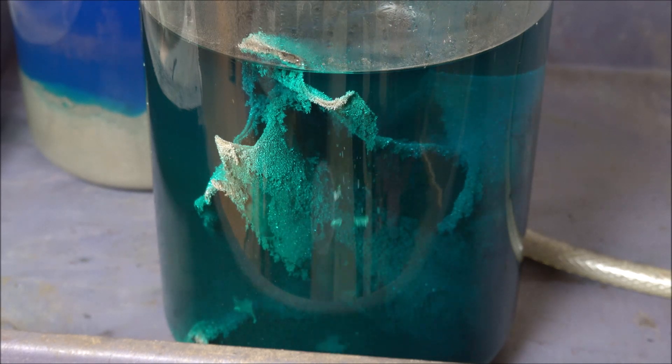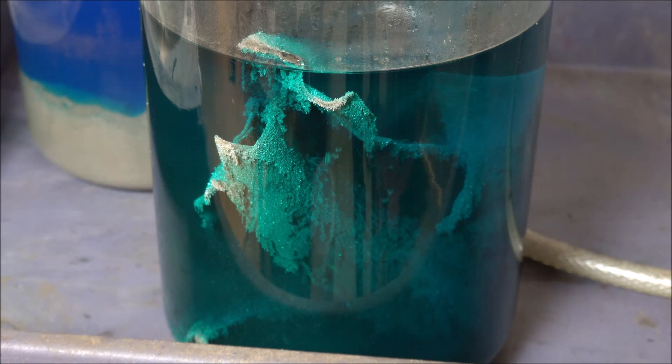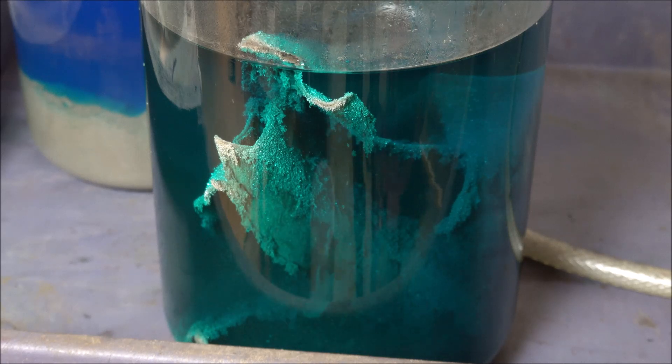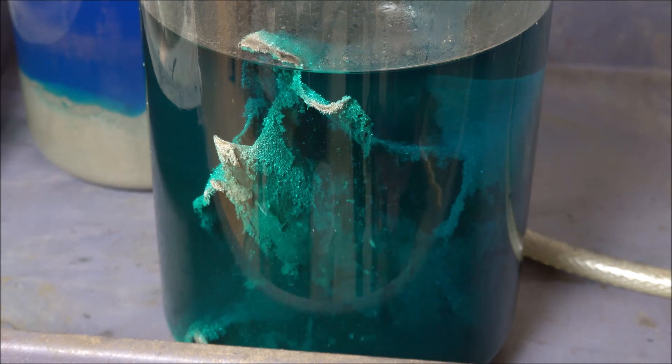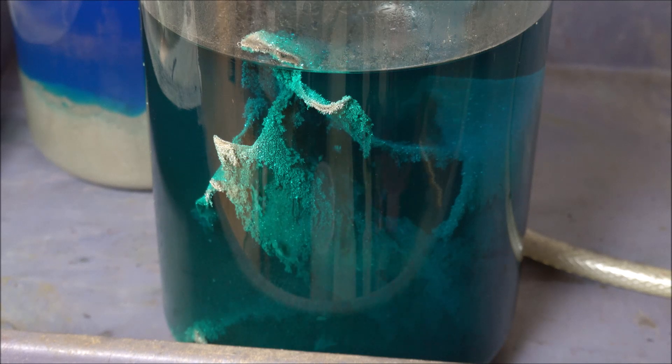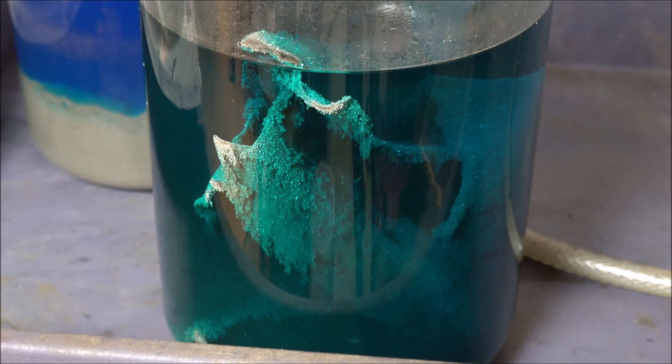I use this same process to get the silver out of my gold refining silver solutions as well. Any precious metals in those solutions including platinum group metals and gold will also cement out as a black powder. The silver coming off of that copper is nearly 999 fine silver.